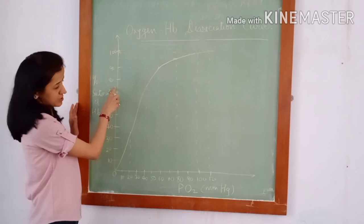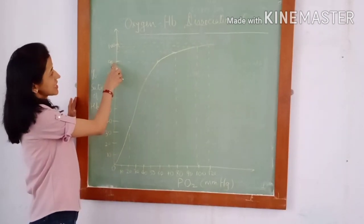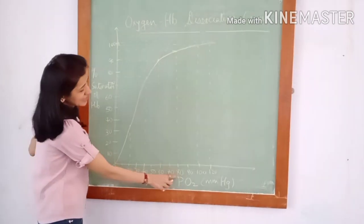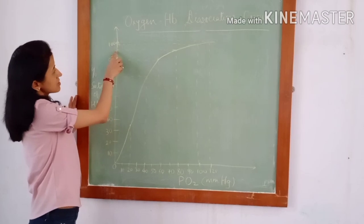At 40 mmHg PO2, percentage saturation is 75%. At 60 mmHg PO2, percentage saturation is 89 or 90%. At 80 mmHg PO2, the percentage saturation becomes 95%.